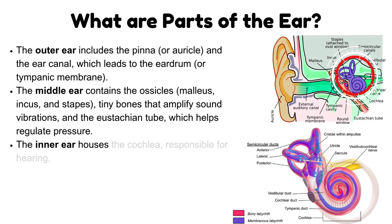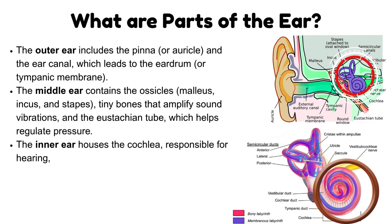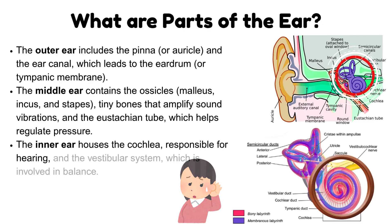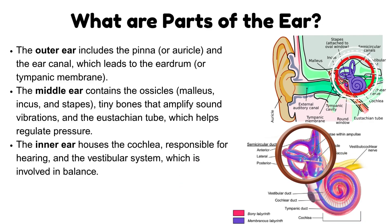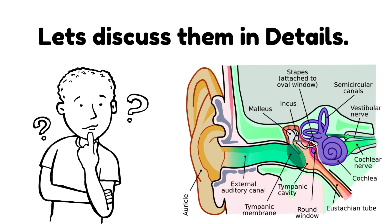The inner ear houses the cochlea, which is responsible for hearing, and the vestibular system, which is involved in balance. Let's discuss them in detail.